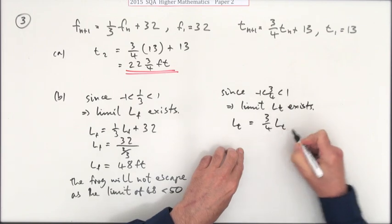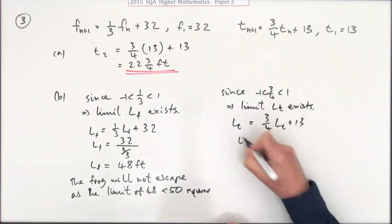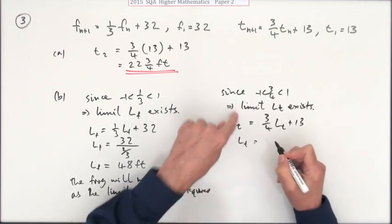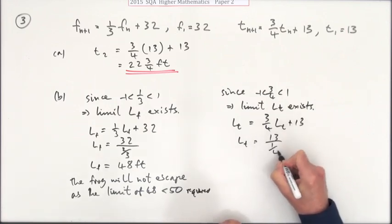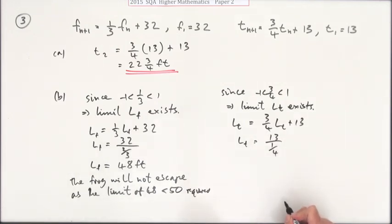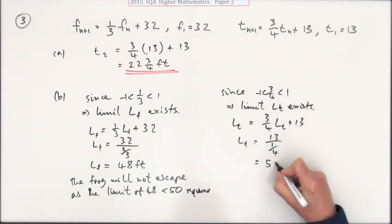Or you can just take that over, which means the limit would be 1 minus three quarters, which is a quarter. Dividing by that: 13 divided by a quarter is 13 times 4, which is 52.